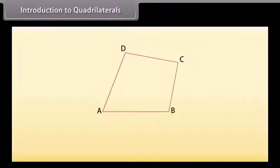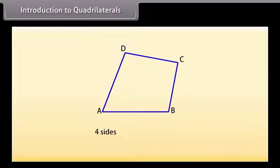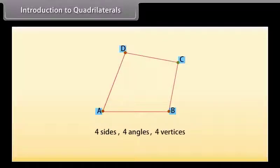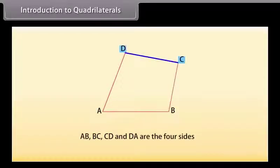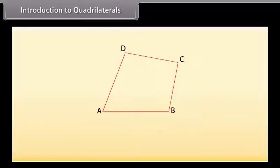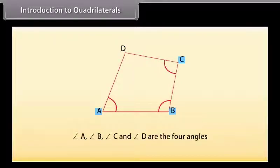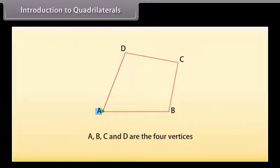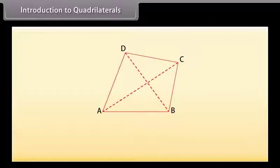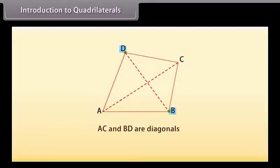Introduction to quadrilaterals: Look at the figure ABCD — this is a quadrilateral. A quadrilateral has four sides, four angles, and four vertices. Here AB, BC, CD, and DA are the four sides; angle A, angle B, angle C, and angle D are the four angles; and A, B, C, D are the four vertices. If we join opposite vertices A to C and B to D, we get the diagonals AC and BD.